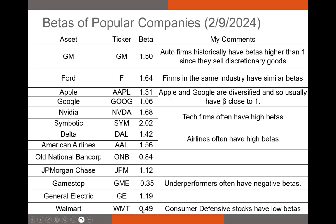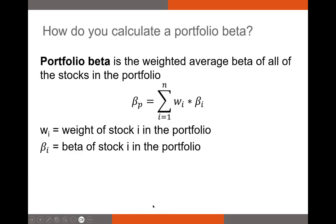We can calculate the beta for any security that has regular stock returns. To calculate the portfolio beta, we simply take a weighted average of our individual security betas — multiply each security's weight (at the beginning of the period) by its beta, sum all those values, and that gives us the portfolio beta.